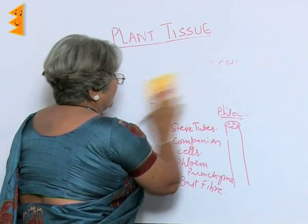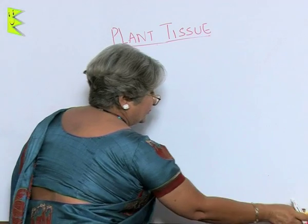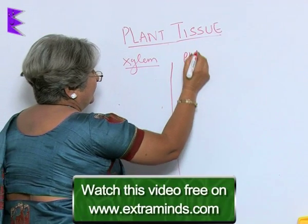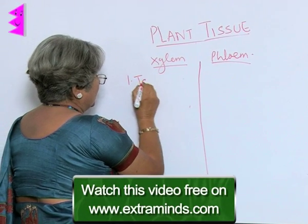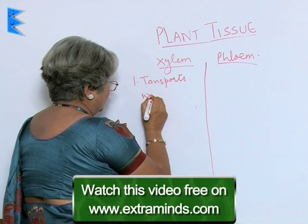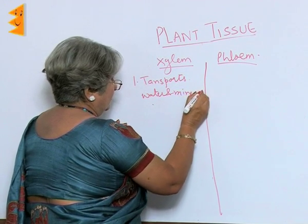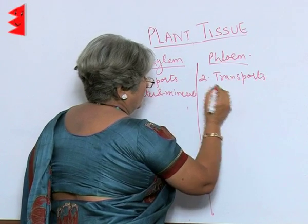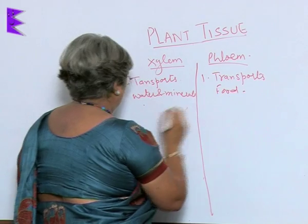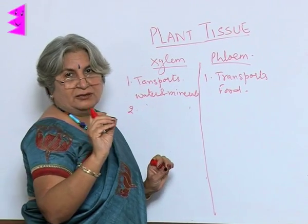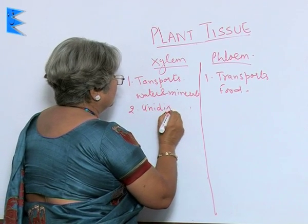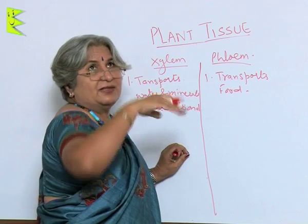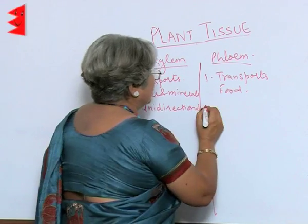We can have a comparison of xylem and phloem. Xylem transports water and minerals, while phloem transports prepared food. The movement in xylem is unidirectional — only in one direction. But that is not possible in the case of phloem, because food has to reach everywhere, even the branches which are above or below to the roots, so it is in both directions.